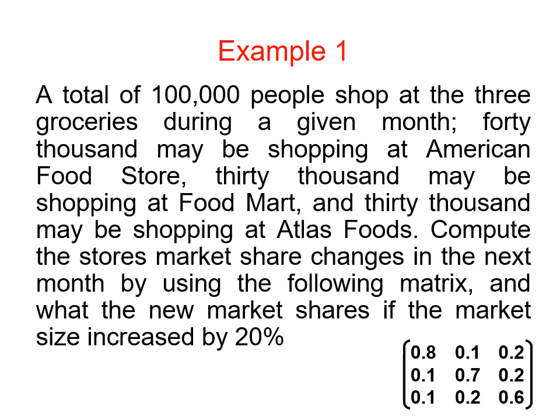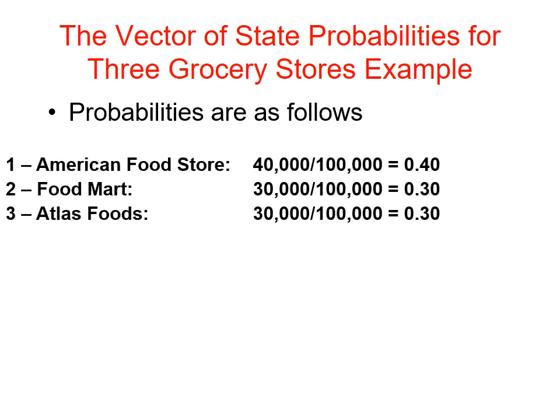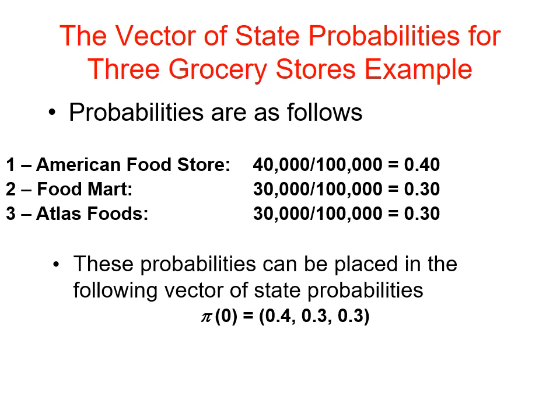Also determine the new market share if the market size increases by 20%. The vector of state probability for the three grocery stores: the probabilities are as follows — American Food Store: 40,000 divided by 100,000, which represents the sum of the three groceries, equals 0.40. Food Mart: 30,000 divided by 100,000 equals 0.30. Atlas Food: 30,000 divided by 100,000 equals 0.30. This probability can be placed in the following vector of state probability.